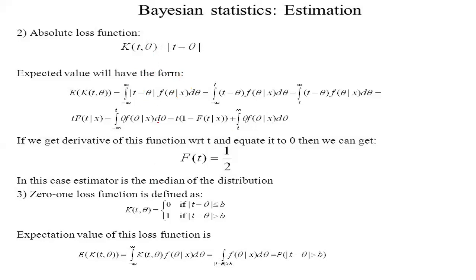When we obtain a value on the basis of an observed random sample from some density function, we may call the value of some estimator T = t(x₁, …, xₙ) a decision and call the estimator itself our decision function. For Bayesian estimation, we define a statistic, integrate it with respect to its limits and the parameter θ, find its values, differentiate with respect to t, and set equal to zero. The zero-one loss function is defined as L(t, θ) = 0 if |t − θ| ≤ b, and 1 if |t − θ| > b.